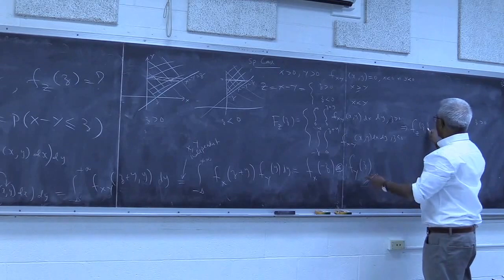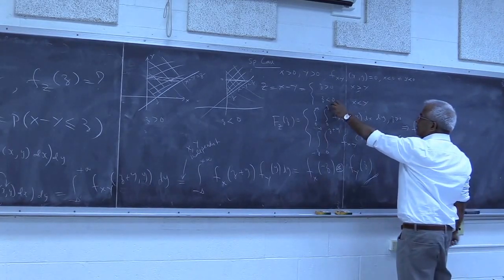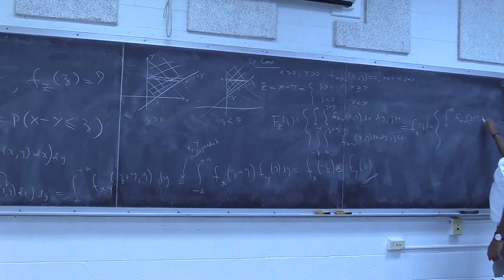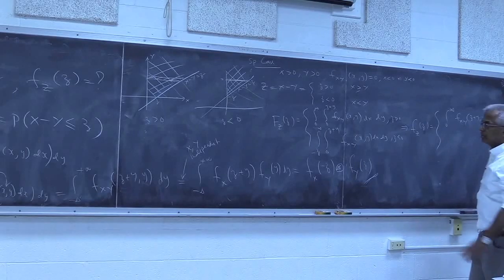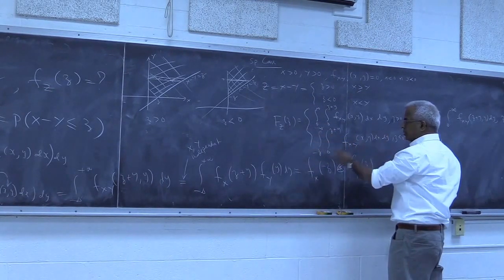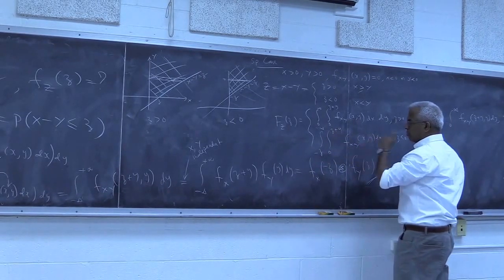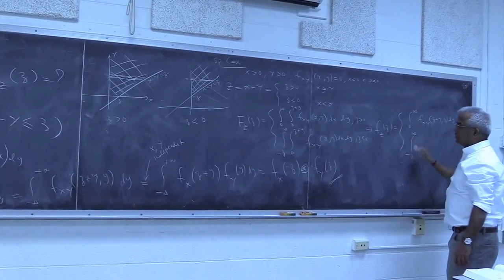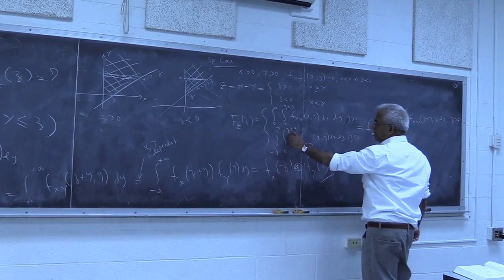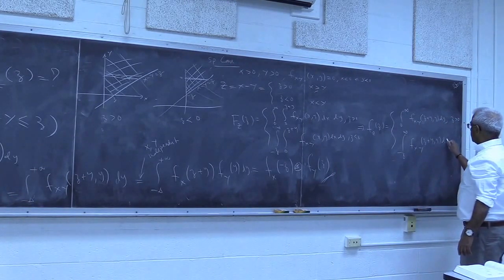Taking the derivative to get the density: for z positive, the derivative of the top limit is 1, so the density is the integral from 0 to infinity of f(z+y, y) dy. For z negative, the derivative of the top limit is 1 (giving a contribution), and the derivative of the bottom limit (minus z) is minus 1, but when substituted into the integrand at x = 0 the contribution is 0. So the density becomes the integral from minus z to infinity of f(z+y, y) dy, for z negative.